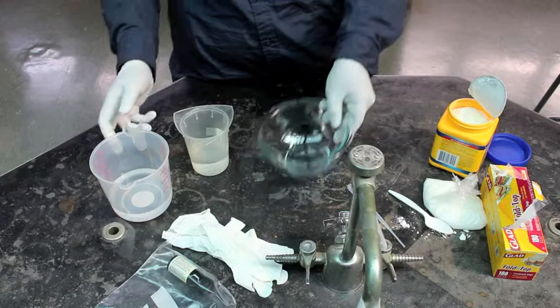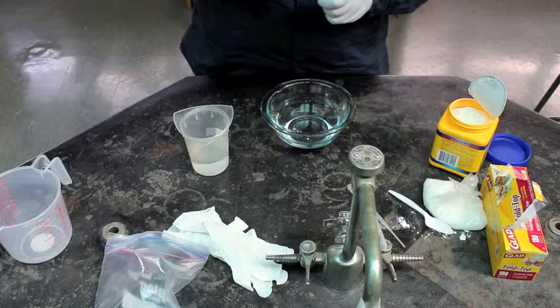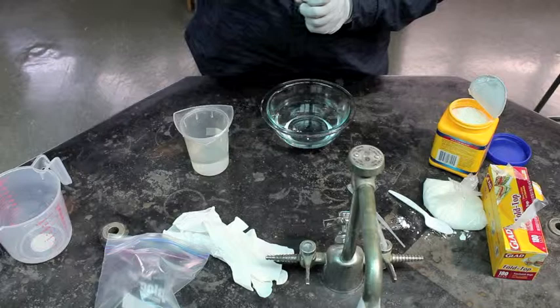Now we get our one cup of water and put it in our bowl. Okay. Next, we're going to get our iodine and place roughly around 15 to 20 drops in the water solution.